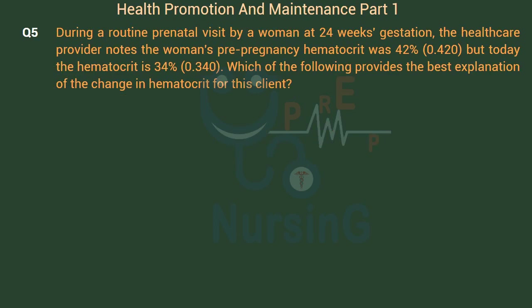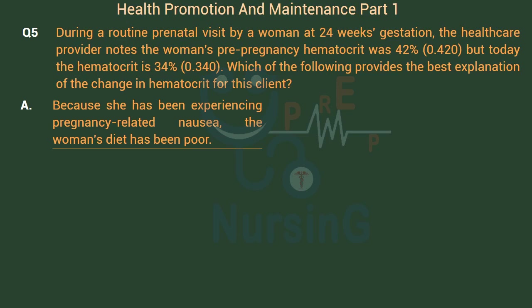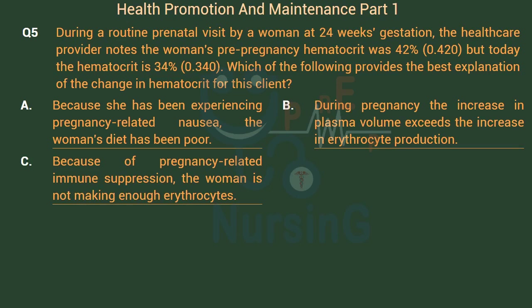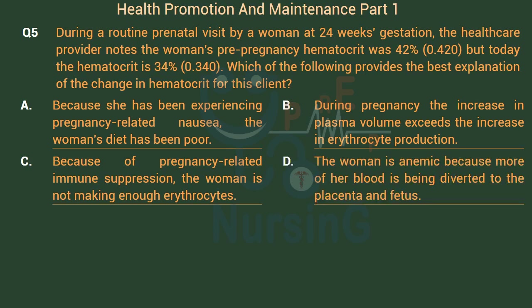During a routine prenatal visit by a woman at 24 weeks gestation, the healthcare provider notes the woman's pre-pregnancy hematocrit was 42% but today the hematocrit is 34%. Which of the following provides the best explanation? Option A: Because of pregnancy-related nausea, the woman's diet has been poor. Option B: During pregnancy the increase in plasma volume exceeds the increase in erythrocyte production. Option C: Because of pregnancy-related immune suppression. Option D: The woman is anemic because more of her blood is being diverted to the placenta and fetus.